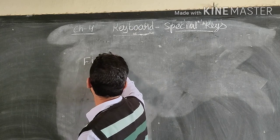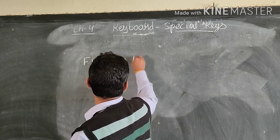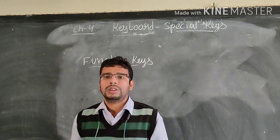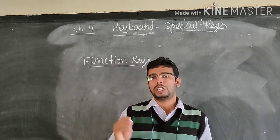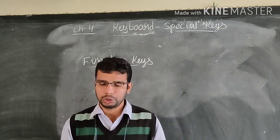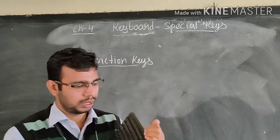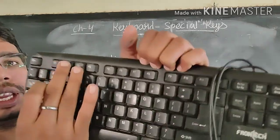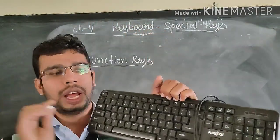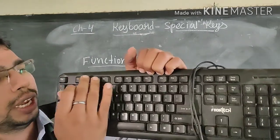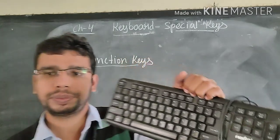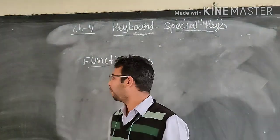Function keys. The function keys are on the topmost row of the keyboard. Let me show you. This is a function key, and it is on the topmost row of the keyboard. You can see it is on the topmost row. And there are 12 function keys.